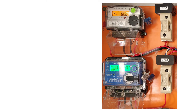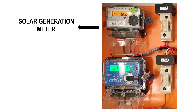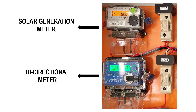In a typical rooftop solar system, there are generally two meters installed in your energy panel: a solar generation meter which records only the solar generation, and a bi-directional meter which records both the import and export of energy. The bi-directional meter is the one used by DISCOMs for billing.